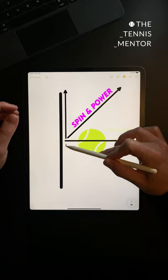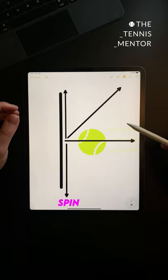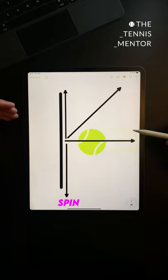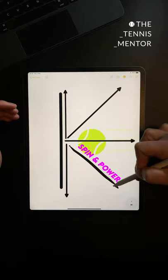On the flip side if your racket path is moving straight downwards then you'll be creating maximum slice and if you want to hit slice but not so much you would swing slightly in between the two.